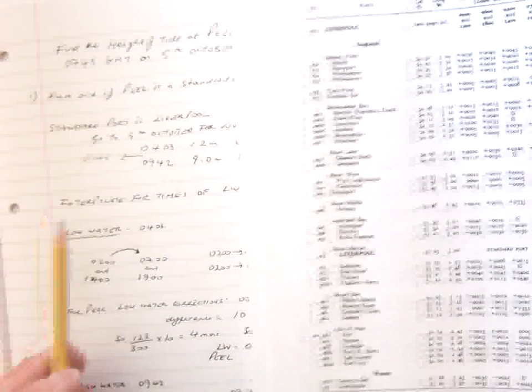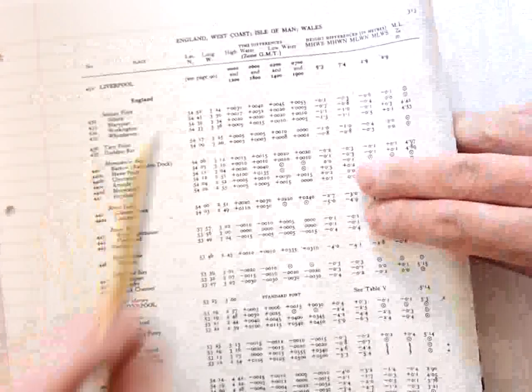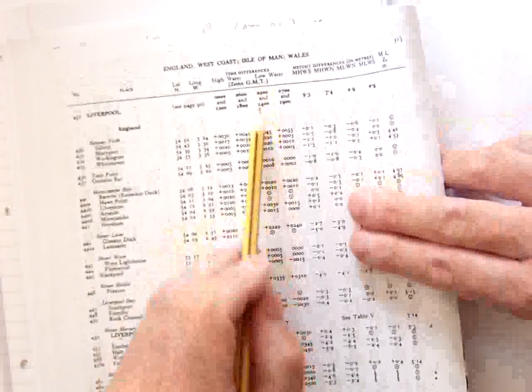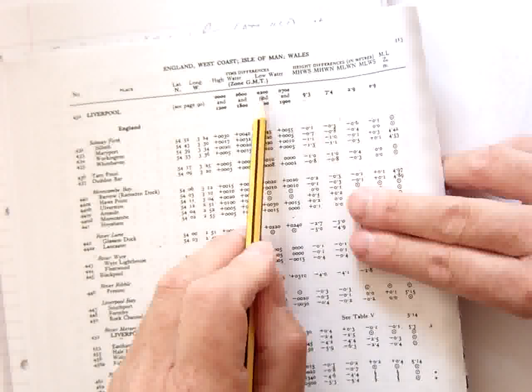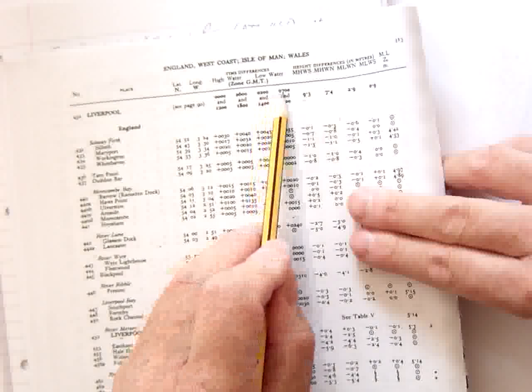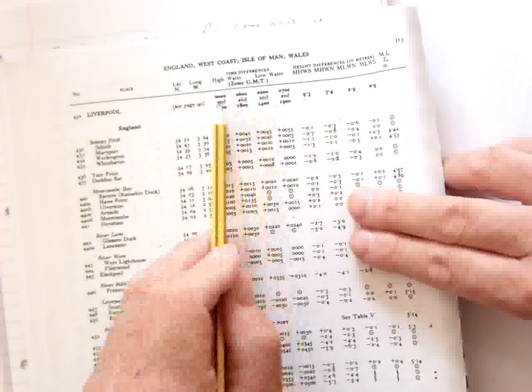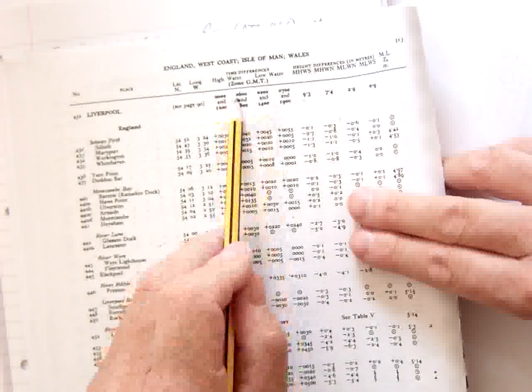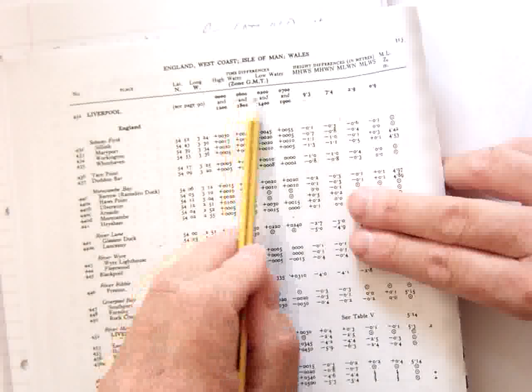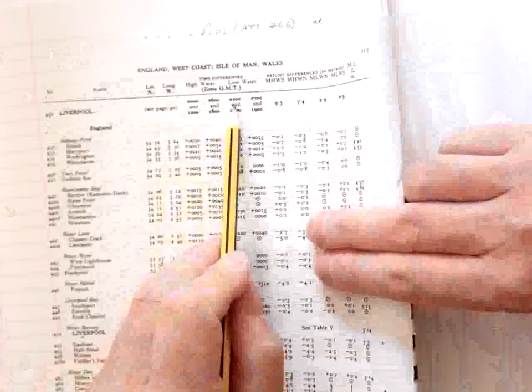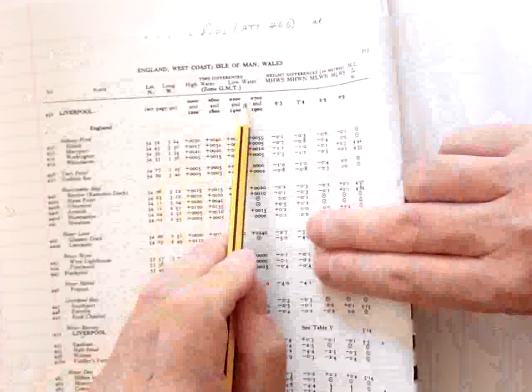So let's look at low water. We're told that low water is 0403. Low water at the top here, and we're given times. So low water must fall between 0200 and 0700. Be careful with these gaps because, for example, on the left-hand side there, 0600, you've got a 6-hour gap. 0200 to 0700, you've got a 5-hour gap. Anyway, our time is 0403. So we're between 0200 and 0700 at 0403.